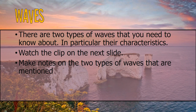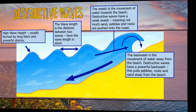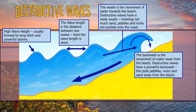There are two different types of waves. We need to look at them specifically — their characteristics, how they differ, and how their impacts differ. The first type is destructive waves. As the title suggests, they destroy the beach. The swash is the movement towards the beach — destructive waves have a weak swash, meaning not a lot of sand, pebbles, or rocks are pushed up the coast. What they do have is a strong backwash, pulling material back into the sea.